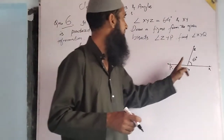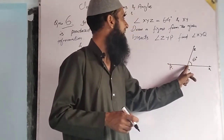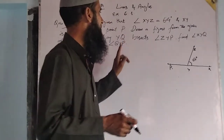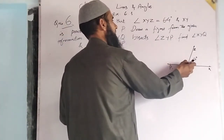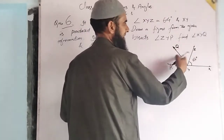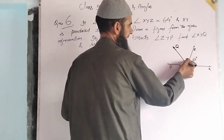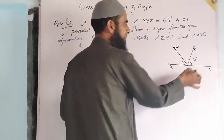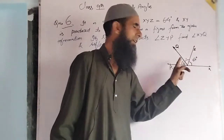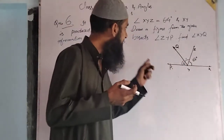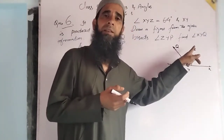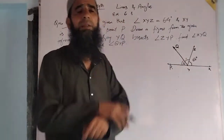First, angle ZYP — this angle is being bisected by ray YQ. Here one ray YQ is drawn. It bisects this angle. Let us call it angle 1 and angle 2. YQ bisects angle PYZ, therefore angle 1 is equal to angle 2. This is our given condition: ray YQ bisects angle PYZ, which implies angle 1 equals angle 2.